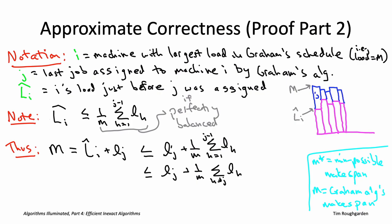Adding those two terms together and simplifying: for the last inequality, we throw in the lengths of jobs after job J, if any — jobs J+1 up to N — since lengths are positive, that only makes the quantity larger. Then we move a 1-over-m fraction of job J's length into the sum so that the sum becomes a sum over all job lengths. Now we have an upper bound on the makespan of Graham's schedule in terms of our two intermediate quantities — our two lower bounds on M star.